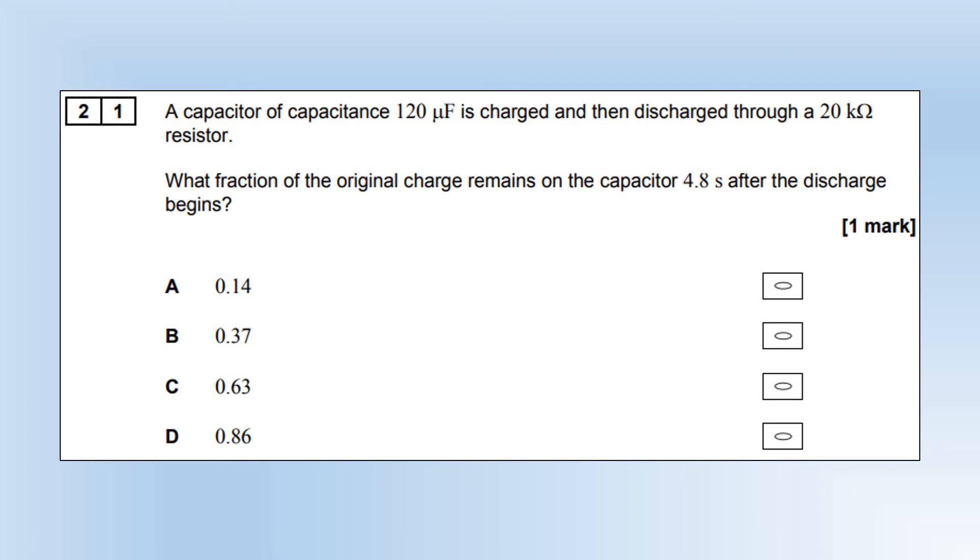A capacitor of capacitance of 120 microfarads is charged, then discharged through a 20 kiloohm resistor. What fraction of the original charge remains on the capacitor 4.8 seconds after discharge begins? We're going to use the charge-discharge equation. We want the fraction of the original, so we want Q over Q zero. Plug our numbers in, and we end up with 0.14, which is option A.